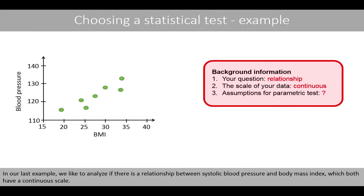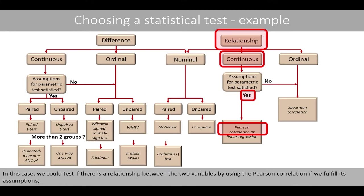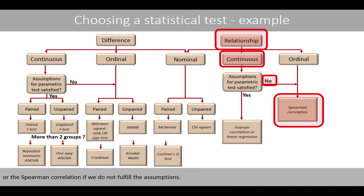In our last example, we'd like to analyze if there is a relationship between systolic blood pressure and body mass index, both of which have a continuous scale. We could test if there is a relationship between the two variables using the Pearson correlation if we fulfill its assumptions, or the Spearman correlation if we do not fulfill the assumptions.